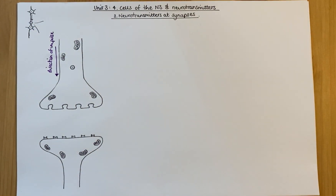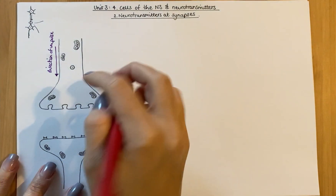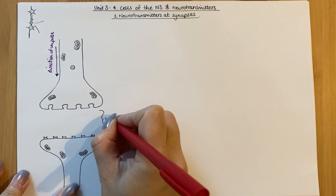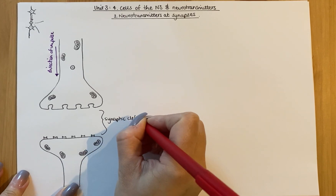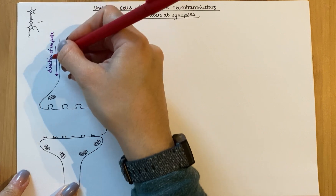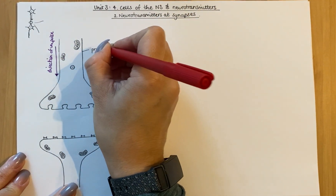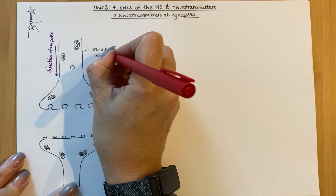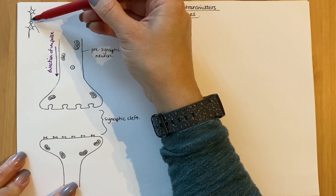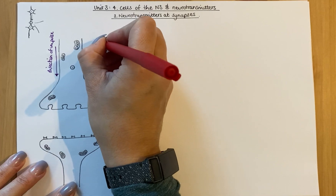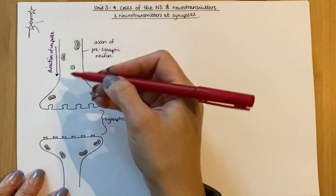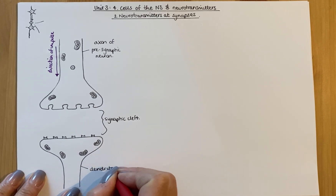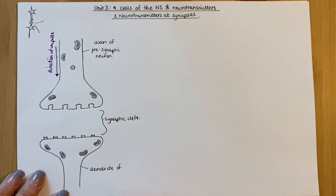There are a few things to label before I start describing what's going on. Because this is before the synapse — what's known as a synaptic cleft — this is called the pre-synaptic neuron. In terms of what part of the neuron it is, it's the axon leading from the cell body. An axon from one neuron feeds into the dendrite of the next neuron, which is the post-synaptic neuron because it's after the synapse.